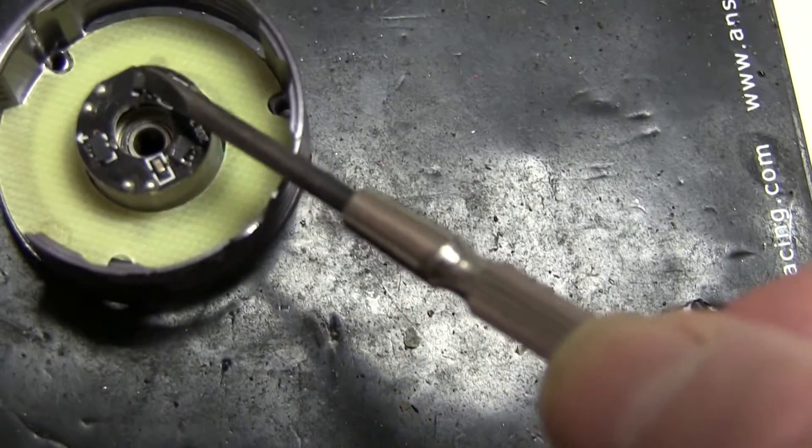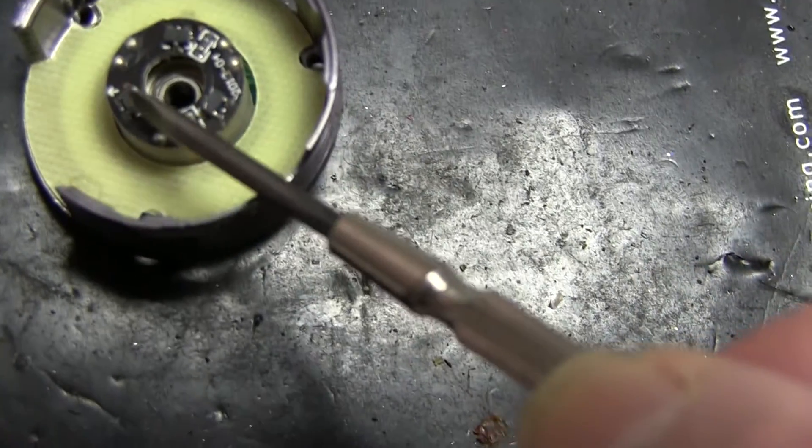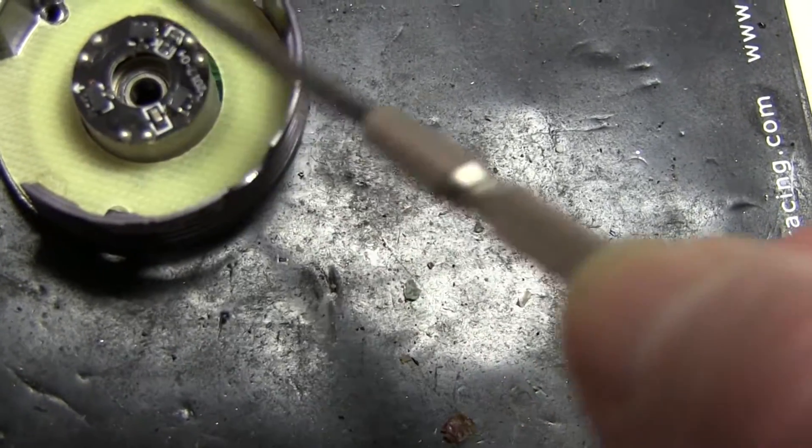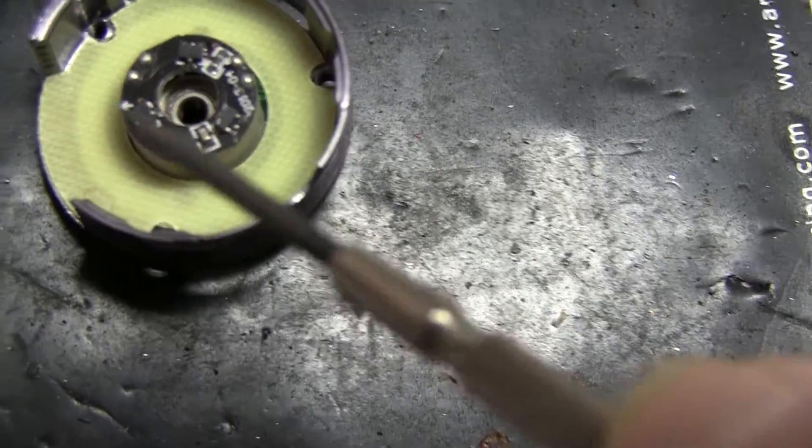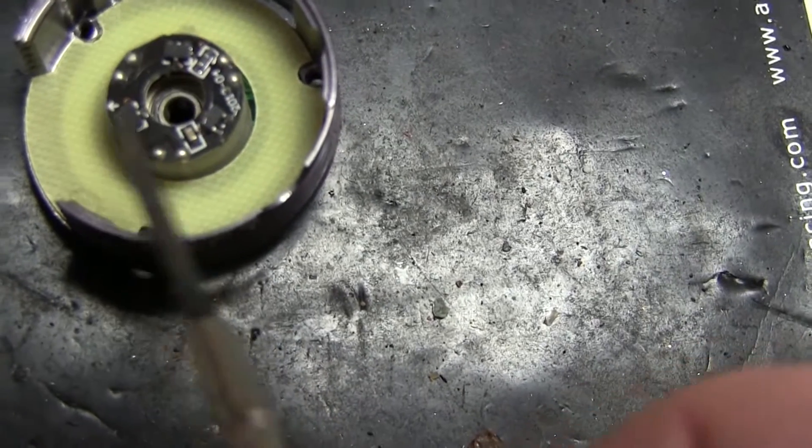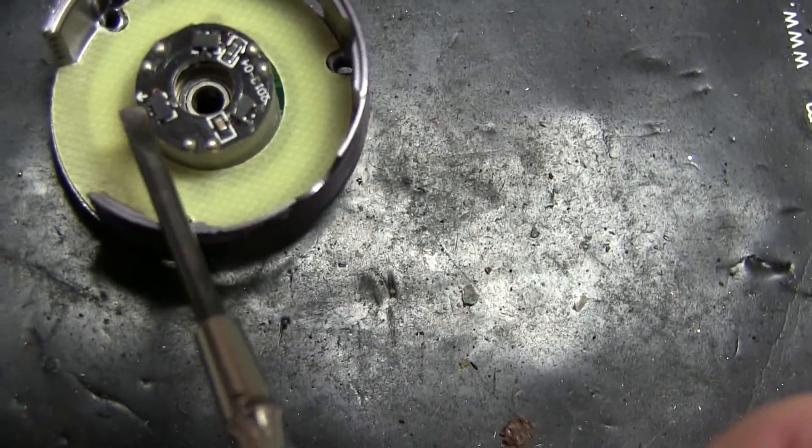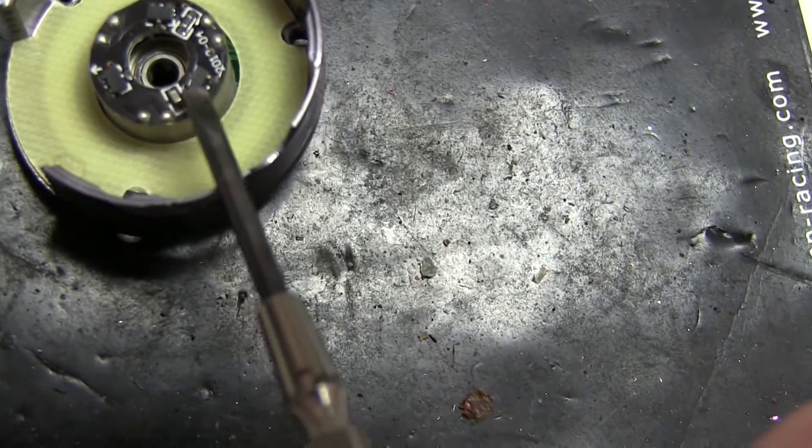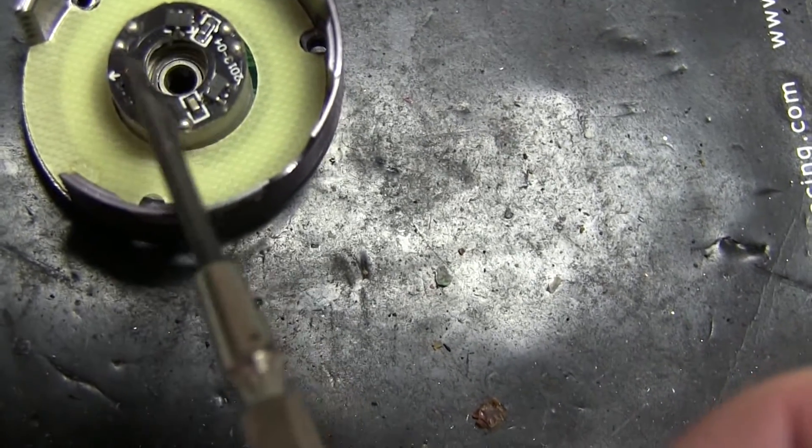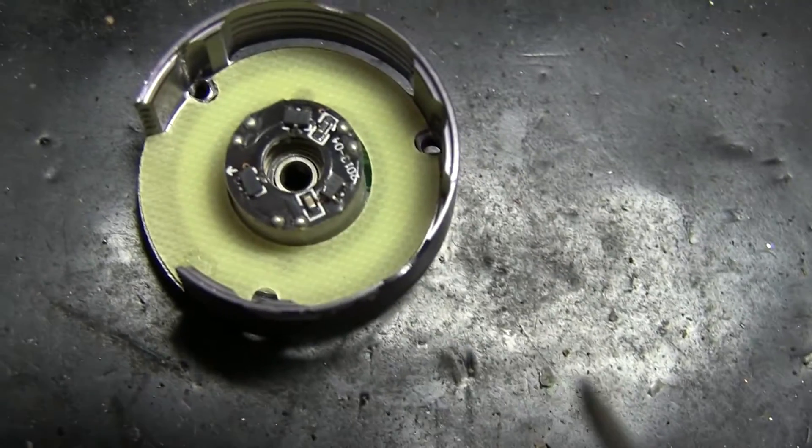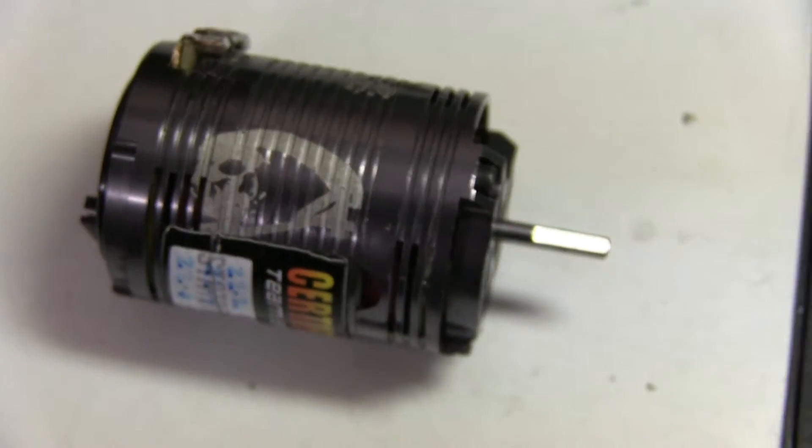Now if these haven't been soldered in very well, you will get variation as it passes each one. So we're going to have a look at one that's a long way out and see if we can resolder the sensor back into its little box.